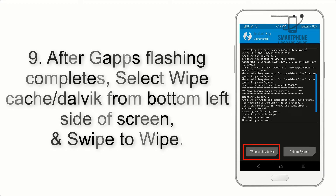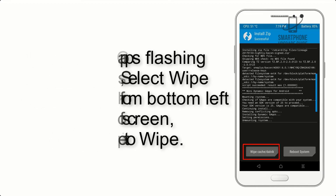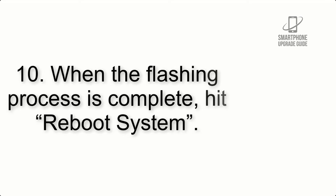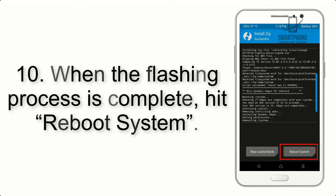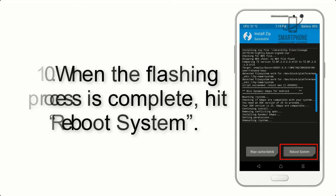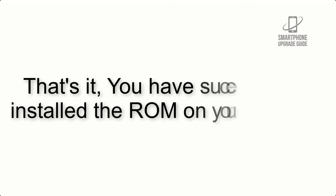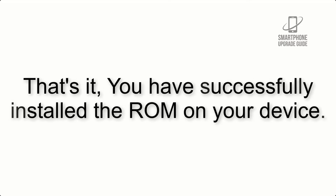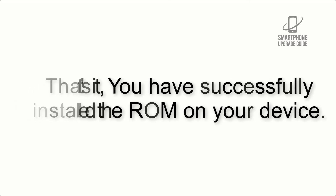Step 8: Flash the GApps zip package in the same manner. Step 9: After GApps flashing completes, select Wipe Cache and Dalvik from the bottom left side of the screen and swipe to wipe. Step 10: When the flashing process is complete, hit Reboot System. That's it — you have successfully installed the ROM on your device.